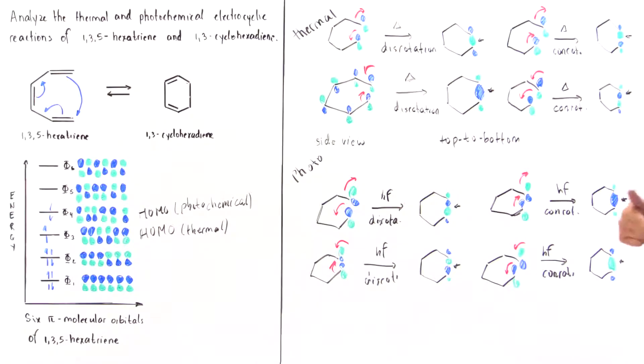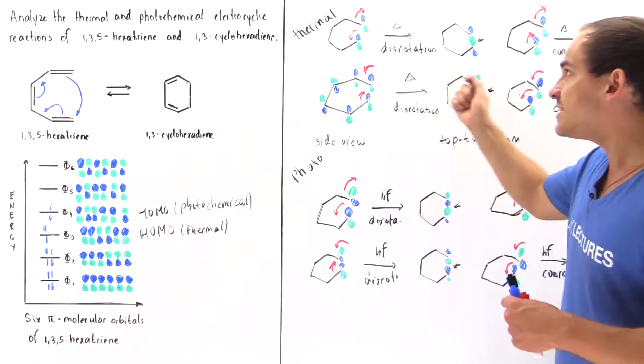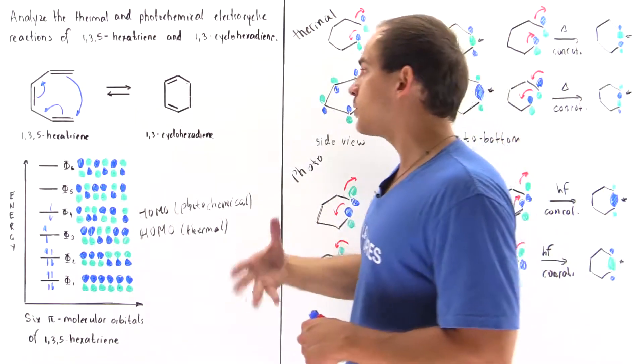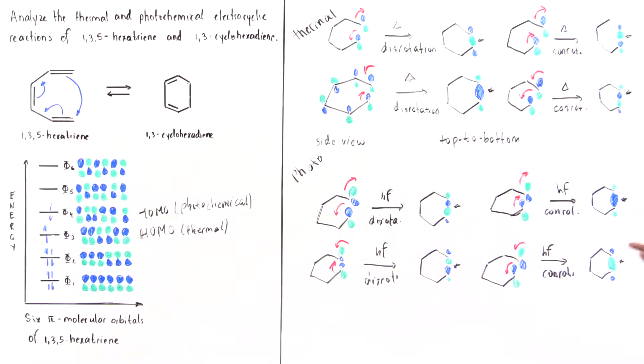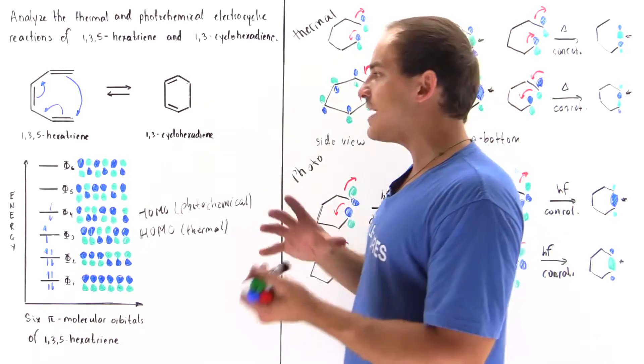via the con-rotatory fashion. Sometimes it takes place via disrotation for this case, but for example, for 1,3-cyclobutadiene, it takes place via the con-rotation. So to determine which type of rotation it is,